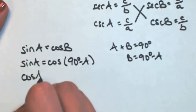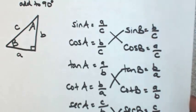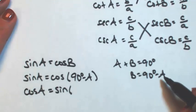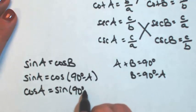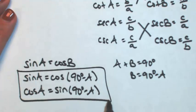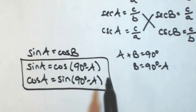Likewise, cosine of angle A is equal to sine of angle B. Again, B is 90 minus A.